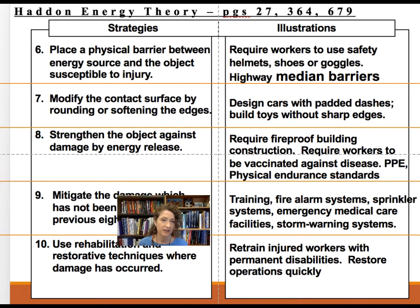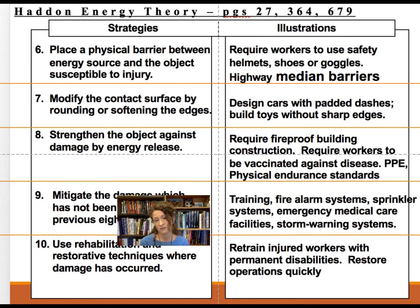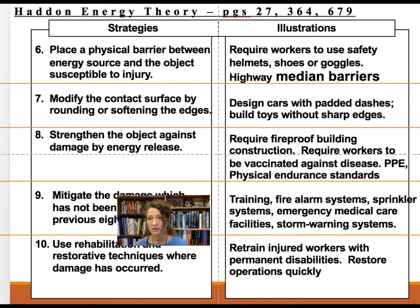During the event, rule seven is to modify the contact surface by rounding edges — for example, no sharp edges on equipment or padding goalposts in sports. Rule eight is strengthening the object against the release of energy. In lockout-tagout, workers wearing personal protective equipment strengthens them against energy release. Physical endurance training also makes workers less susceptible to injury.